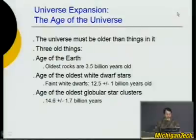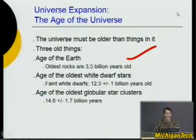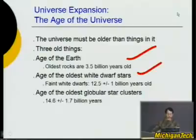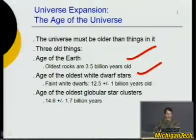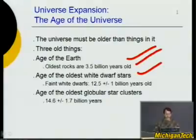For the age of the universe, you need several pieces of information. The age of the universe has to be older than the Earth, and we can date the Earth using techniques like carbon dating — giving at least 3.5 billion years. We can also estimate the ages of white dwarfs from how hot they are, which tells us the universe has to be at least 12.5 billion years old.